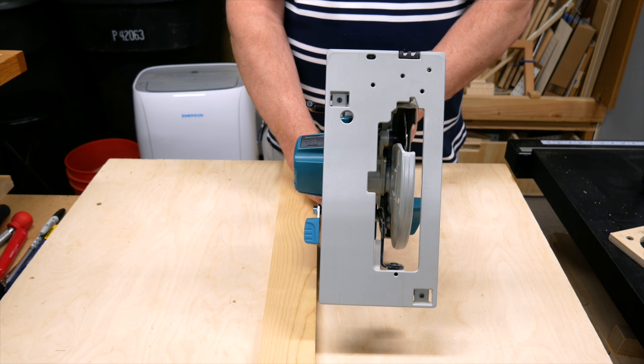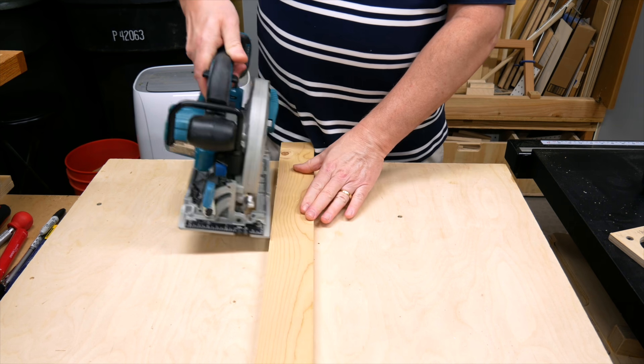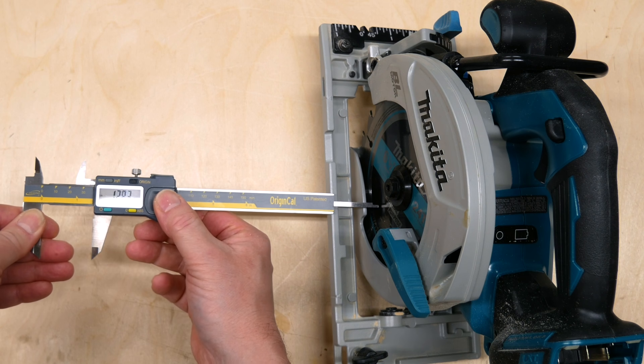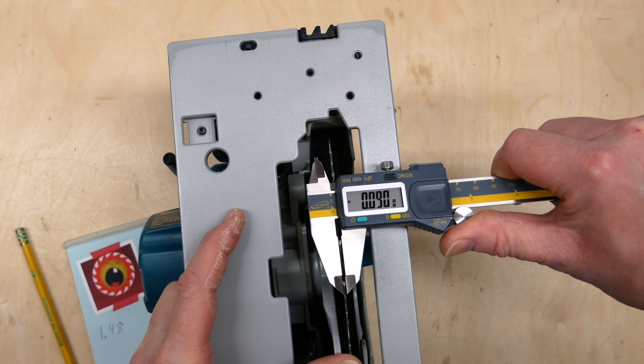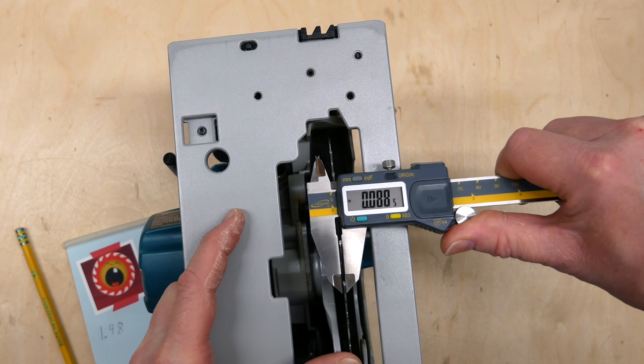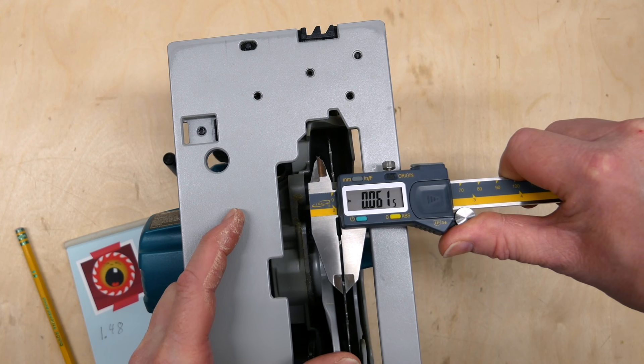For a circular saw, figure out which side you want to run against the straight edge. Then just measure the distance from the edge of the base to the blade. If you want to be exact, you could add half the width of the blade. But if your blade is anything like mine, it's too thin to bother with.